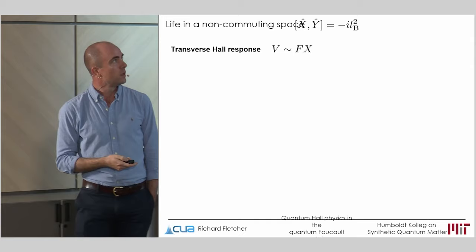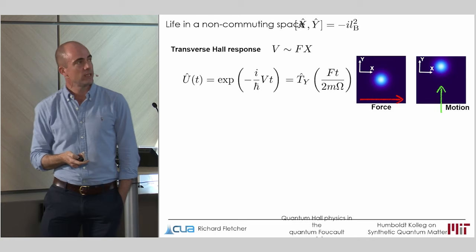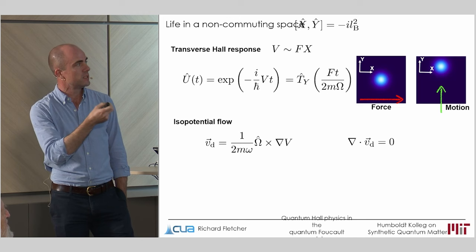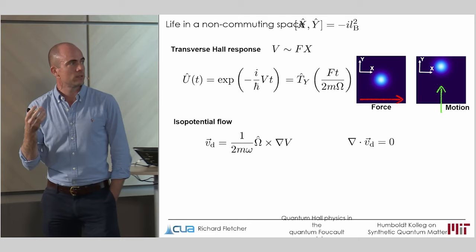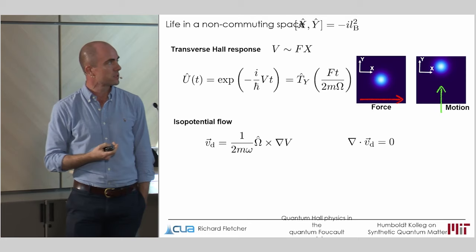You also see the appearance of a transverse Hall response. If you apply a force in the x direction, that's just a potential which varies linearly with x. And so time evolution under this potential looks like a y translation. And generalizing this to an arbitrary scalar potential V, you infer that particles will always locally flow orthogonal to the force that they feel at a rate proportional to that force. This is just isopotential flow. You can check that generically this flow is incompressible, which in some sense is a real space instance of Liouville's theorem. Real space is nice in phase space. And so particles will flow as an incompressible fluid within it.